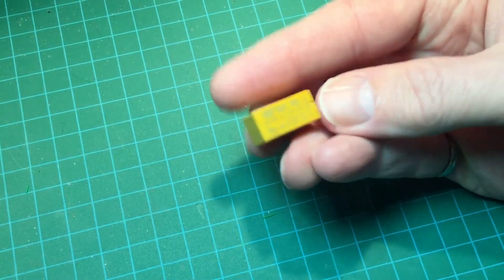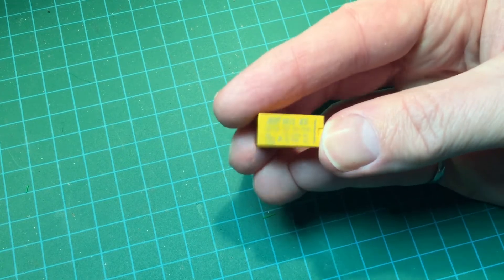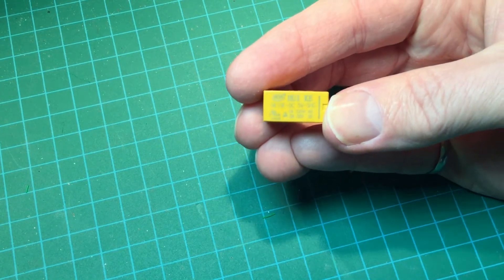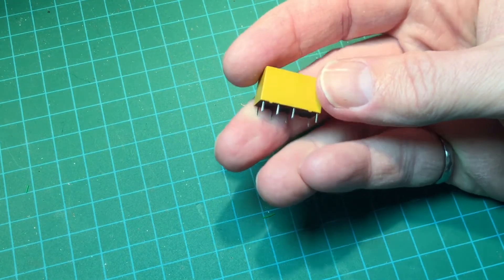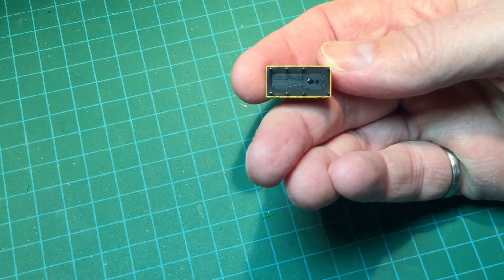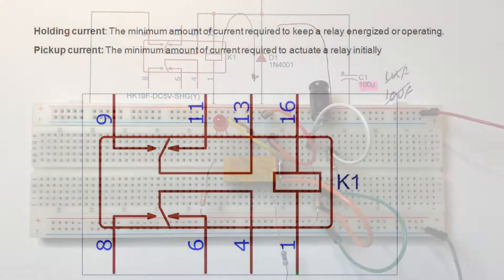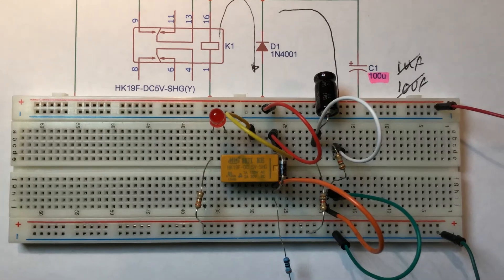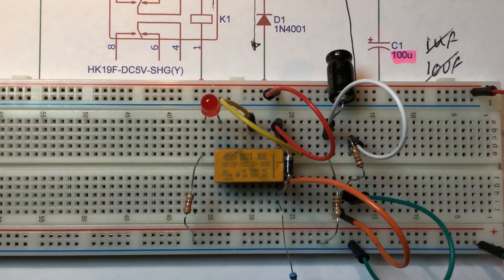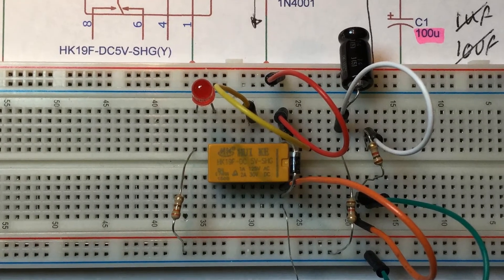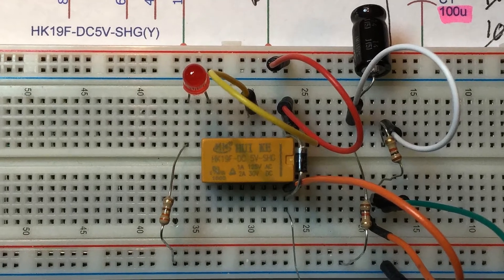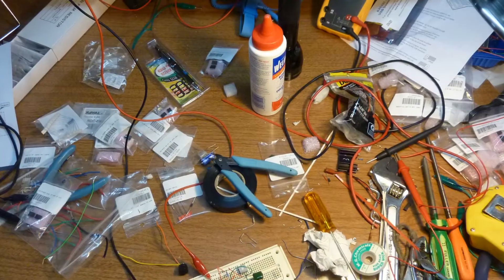Relays like this one can use a lot of power when they're on all the time. It's well known that typically the holding current, the current required to keep the relay on once it's been actuated, is less than the pickup current, the current required to actuate it in the first place. So a good question is, can we devise a simple circuit that will switch to the holding current once the relay has been actuated? I think we can. Let's experiment and give it a try.